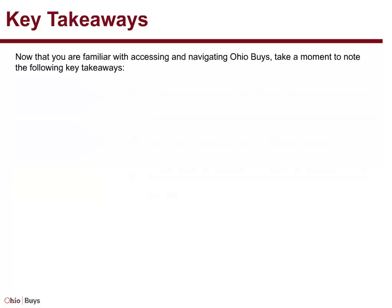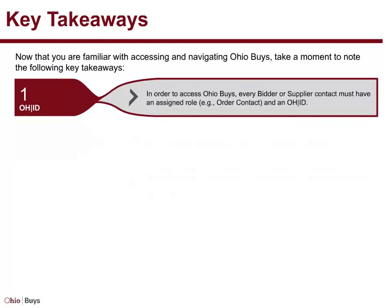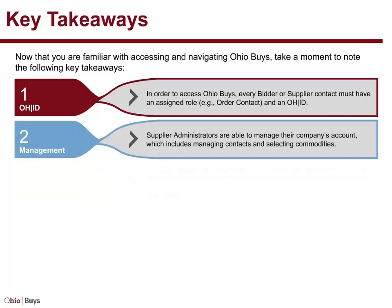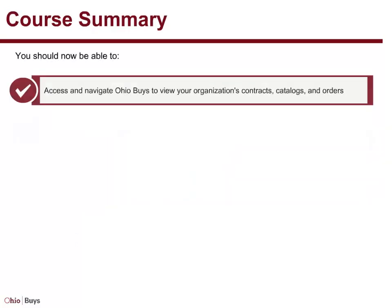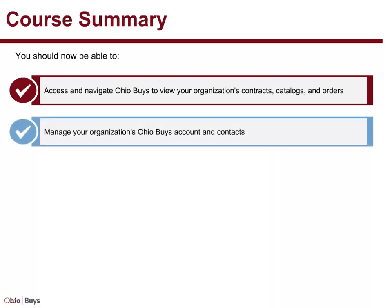Take a moment to note the following key takeaways. In order to access OhioBuys, every bidder or supplier contact must have an assigned role, for example Order Contact, and an OHID. Supplier administrators are able to manage their company's account, which includes managing contacts and selecting commodities. Contacts, orders, and solicitations are managed at the location level, not the supplier level. However, you will receive email notifications whenever you have been invited to participate in a solicitation or have received a new order. You should now be able to access and navigate OhioBuys to view your organization's contracts, catalogs, and orders, and manage your organization's OhioBuys account and contacts.